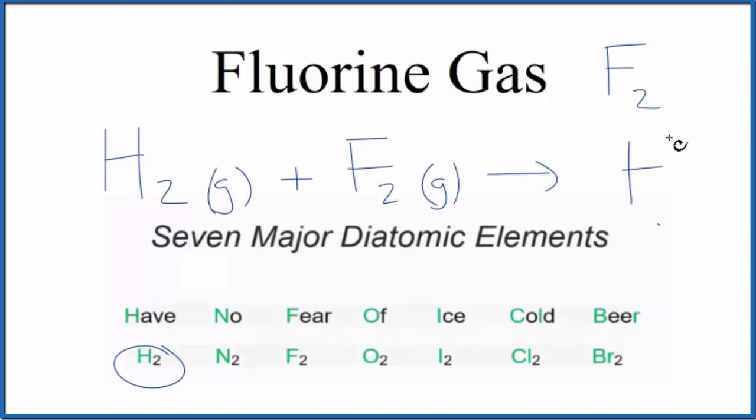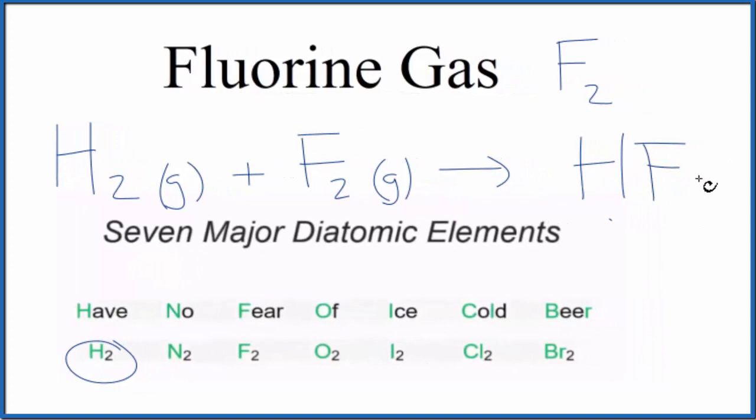And in this equation, we'd end up with HF, hydrogen fluoride, which is a gas here. Probably should balance this since we have two hydrogens and two fluorines. Let's just put a two here. So that's balanced.